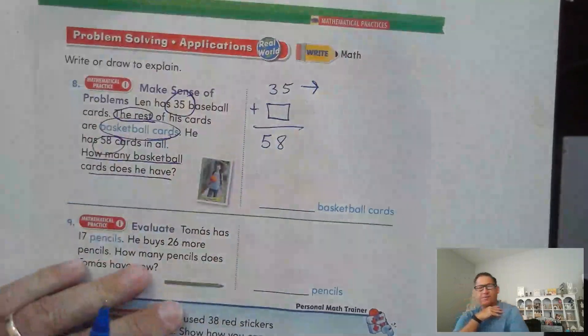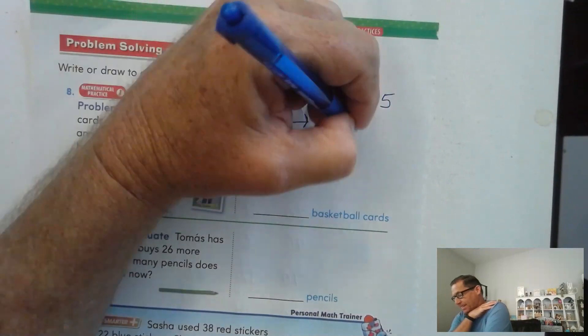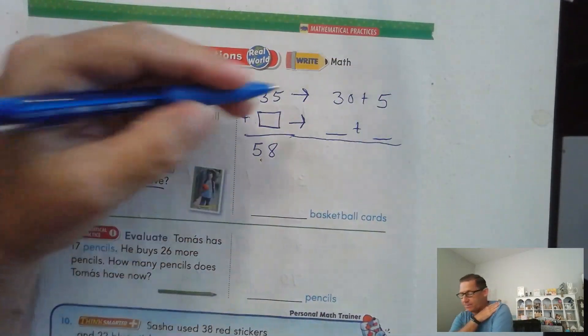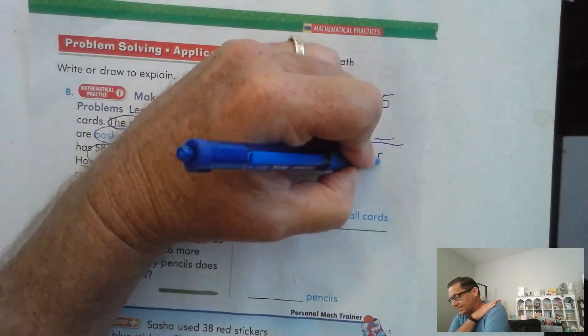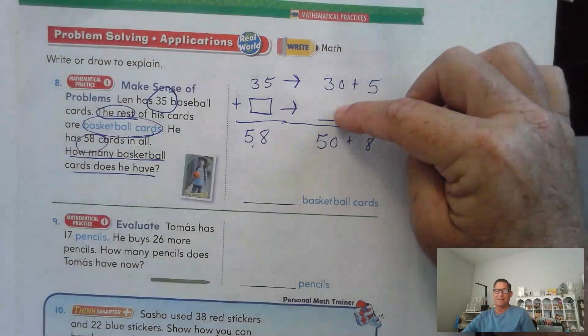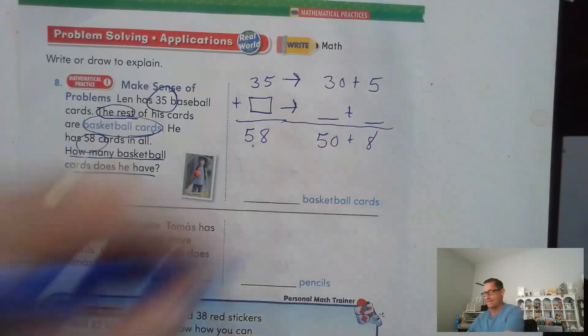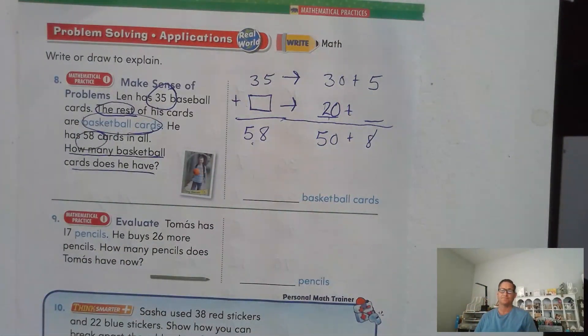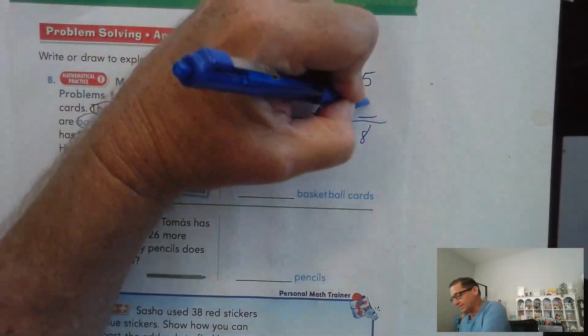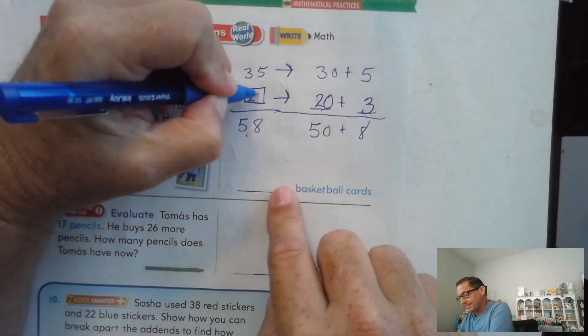Well, let's go ahead and we can still use the method we've been practicing. 35. That's 30 plus 5. And we're going to have two numbers there. And it has to add up to 58. How do we break up 58? 50 plus 8. Well now we should be able to figure this out. 30 plus how many tens gives us 50? 50 is 5 tens. If that's 3 tens, I need to add 2 tens. 5 plus 1 would give me 8 ones. 3. So what is the missing number? 20 plus 3 is 23.